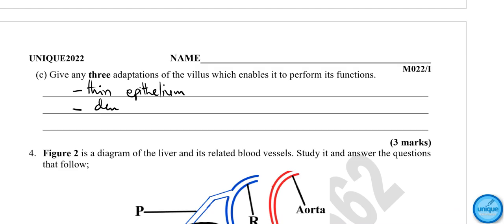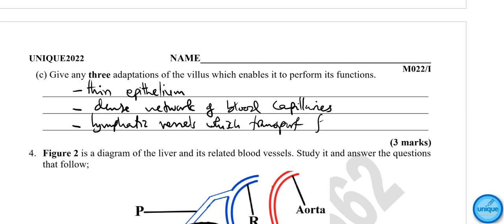It has a dense network of capillaries. Another good answer: it has lymphatic vessels which transport fatty acids and glycerol. It has lymphatic vessels which transport fatty acids and glycerol. That's the thing about this.